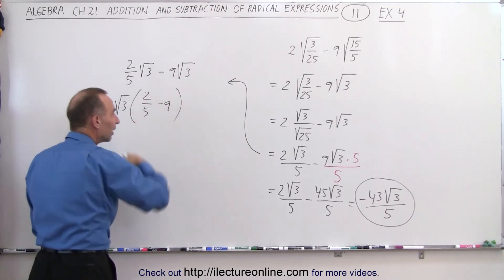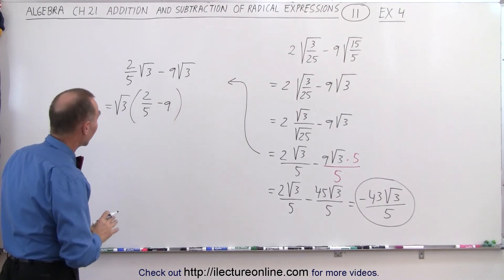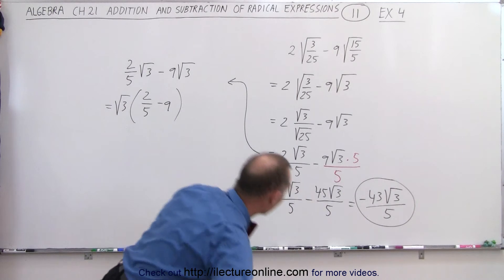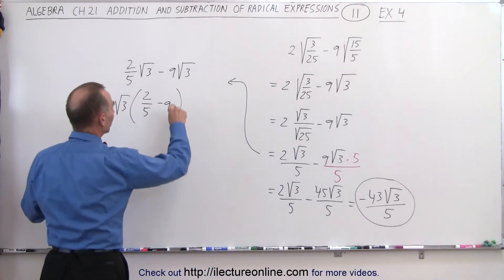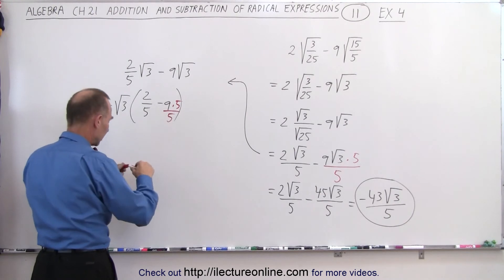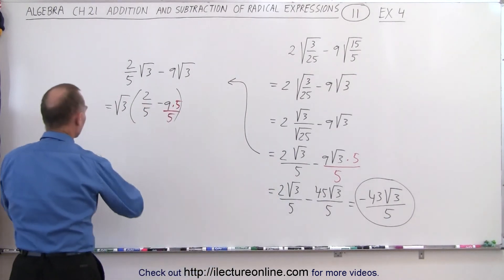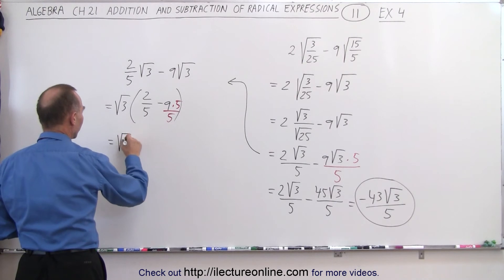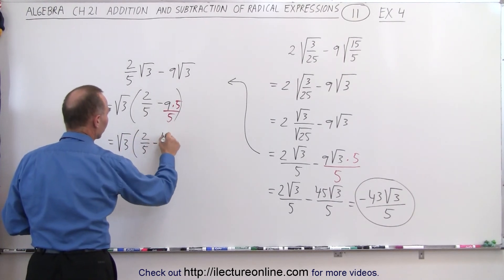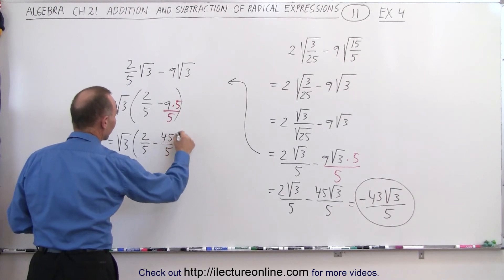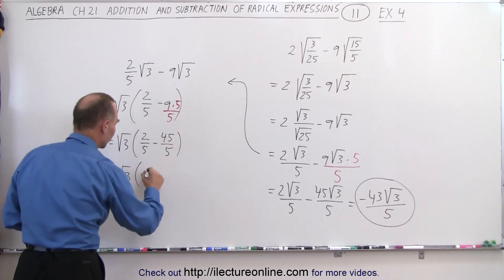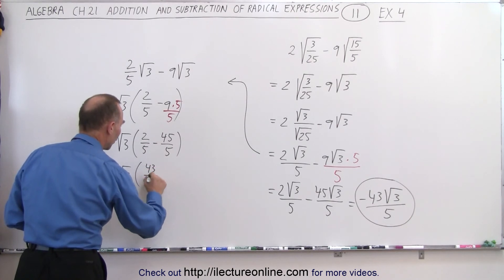This equals √3 times (2/5 minus 9). And then simply simplify this. To do that, we realize we need a common denominator. So we multiply both the numerator and denominator by 5. So this equals √3 times (2/5 minus 45/5). This equals √3 times (2 minus 45 over 5) or -43/5.